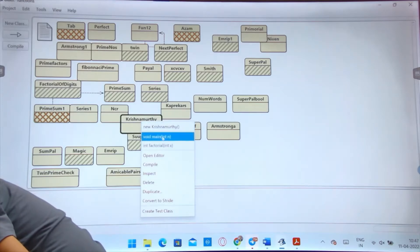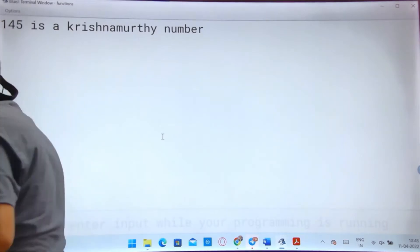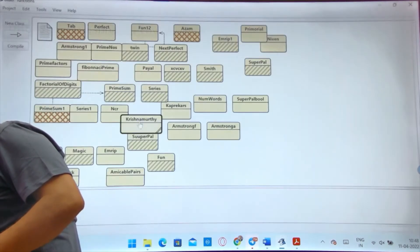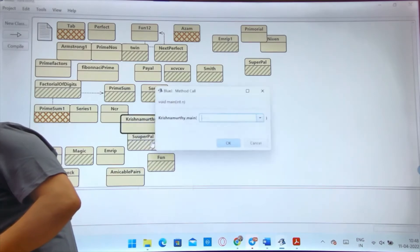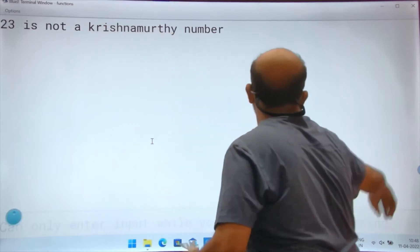Suppose I have given 145. 145 is Krishna Murthy number. If I will give any other number, if it is not Krishna Murthy, if I'm giving 25 or 23, 23 is not. I hope it's clear.